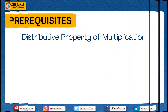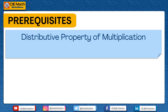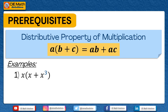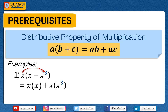The last concept needed for the proof is the distributive property of multiplication, which states that if you multiply a to the quantity b plus c, the product is equal to ab plus ac. For example, if you would like to multiply x to the quantity x plus x cubed, we will multiply x to the first term x, and then multiply x to x cubed.